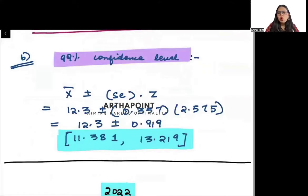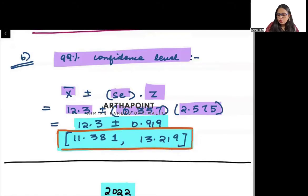The value of standard error will remain the same. The value of mean will remain the same, just that z will change. The value of z at 99% confidence level will be 2.575. So this is going to be 12.3 plus minus 0.919. So this will give you 11.381 to 13.219.